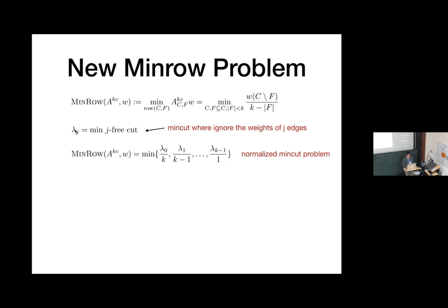Let lambda_j be the minimum j-free cut: the min-cut where you are allowed to ignore the j heaviest edges inside the cut. Lambda-zero is just the normal min-cut; lambda-one means you can ignore one edge; lambda-two means you can ignore two. The normalized min-cut problem corresponds to minimizing over lambda_0/k, lambda_1/(k-1), lambda_2/(k-2), ..., lambda_{k-1}/1. I call this the normalized min-cut problem.